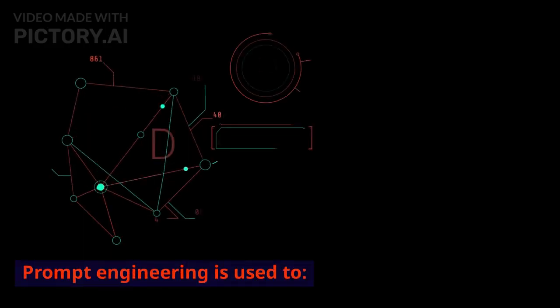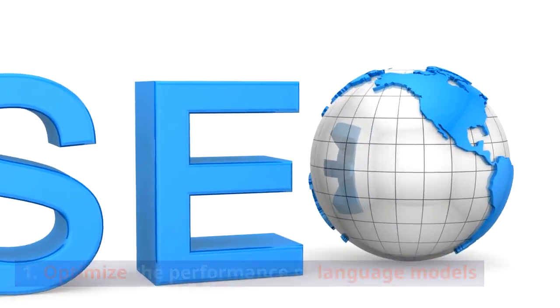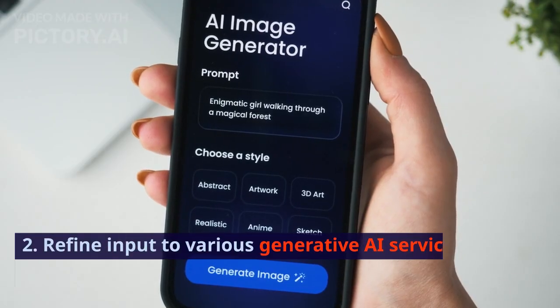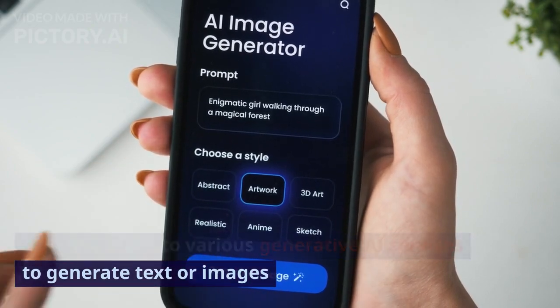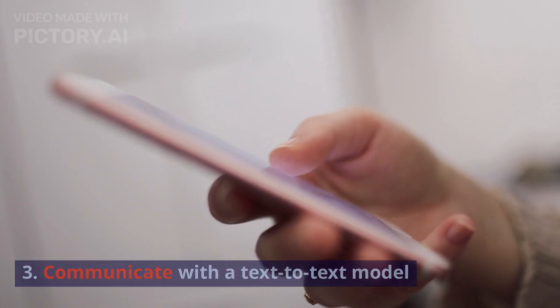Prompt engineering is used to: 1. Optimize the performance of language models. 2. Refine input to various generative AI services to generate text or images. 3. Communicate with a text-to-text model.